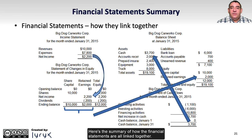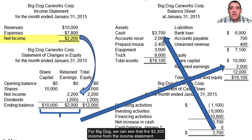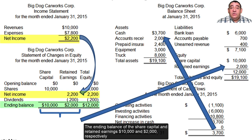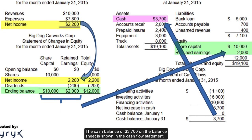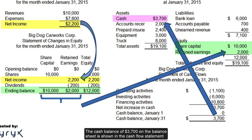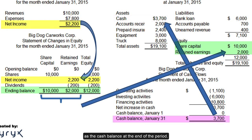Here's a summary of how the financial statements are all linked together. For Big Dog, we can see that the $2,200 income from the income statement appears on the statement of changes in equity as part of what we call retained earnings. The ending balance of the share capital and retained earnings — $10,000 and $2,000 respectively — are shown on the balance sheet as part of equity. The cash balance of $3,700 on the balance sheet is shown in the cash flow statement as the cash balance at the end of the period.